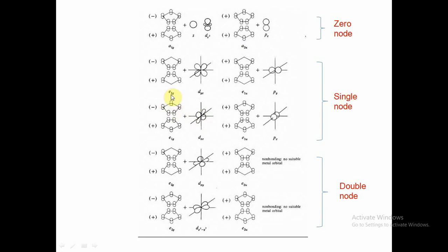For the single-node orbitals, e1g and e1u are present. The e1g symmetry orbitals match dyz and dxz of the metal. For e1u, the respective metal orbitals are py and px. For the double-node orbitals, two nodal planes exactly perpendicular to each other form e2g and e2u. The e2g cyclopentadienyl orbitals match dxy and dx²-y² of the metal. For e2u, there are no suitable orbitals available on the metal side.